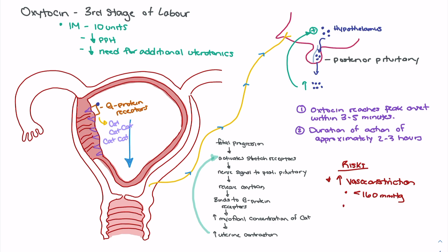Because of the risk of increased blood pressure, oxytocin should be contraindicated in patients who have eclampsia or preeclampsia. Additionally, oxytocin tends to lose its effectiveness in patients who are greater than four hours post placental delivery. In those patients, what is typically seen are clotting issues — the thrombin factor could be an issue — and they may require alternative treatment for their postpartum hemorrhage.